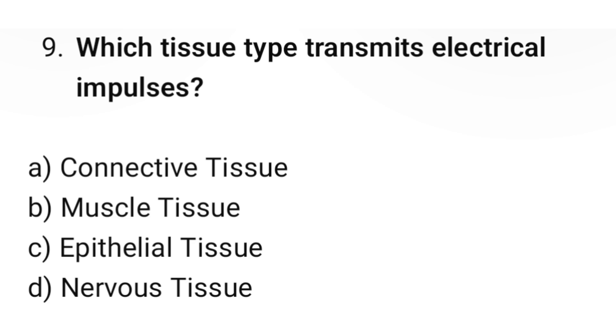Question number 9: Which tissue type transmits electrical impulses? The correct option is D. Nervous tissue.